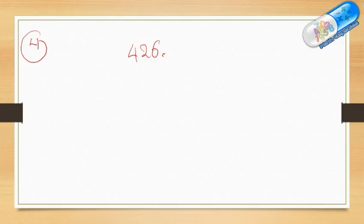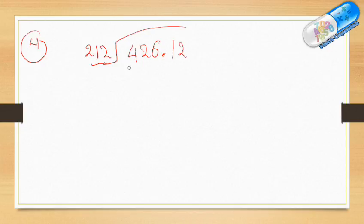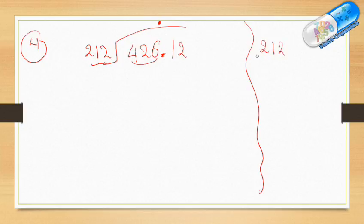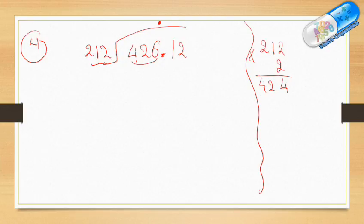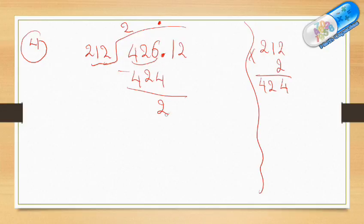One more example: 426.12 divided by 212. We have a 3-digit divisor and a decimal number. Before anything, place the decimal point above the decimal point in the answer and start. Since the divisor has 3 digits, we take 3 digits at once: 426 divided by 212. In the draft: 212 times 1 is 212; 212 times 2 — 2 times 2 is 4, 1 times 2 is 2, 2 times 2 is 4, giving 424. That's very close to 426, so I take 2. 2 times 212 is 424, and subtracting leaves a remainder of 2.